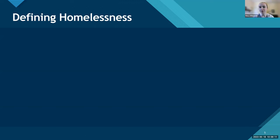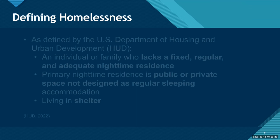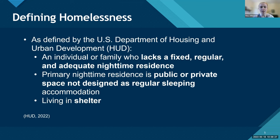Next I'll briefly define homelessness. This is based on the U.S. Department of Housing and Urban Development's definition. The first and most commonly thought-of definition is an individual or family who lacks a fixed, regular, and adequate nighttime residence — someone whose primary nighttime residence is a public or private space not designed as regular sleeping accommodation, such as a street or tent, as well as folks who are living in shelters.